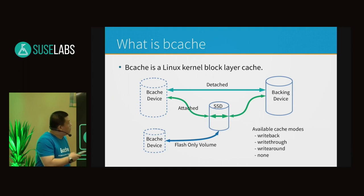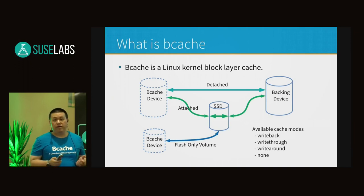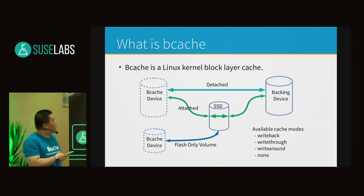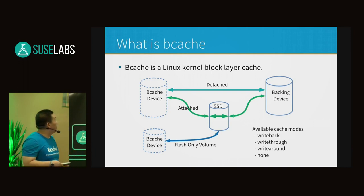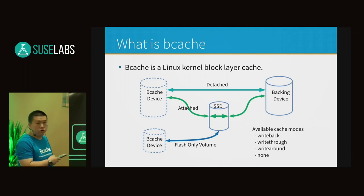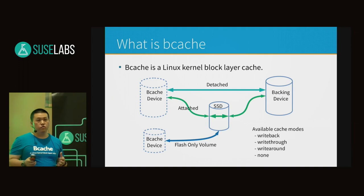If the backend device is detached, the access to the bcache device is the same as accessing the backend hard drive. If the backend device is attached to the SSD, all the random I/O will be cached in the SSD. There is also something special called the flash-only volume — it shares the space of the SSD with some pure random storage.